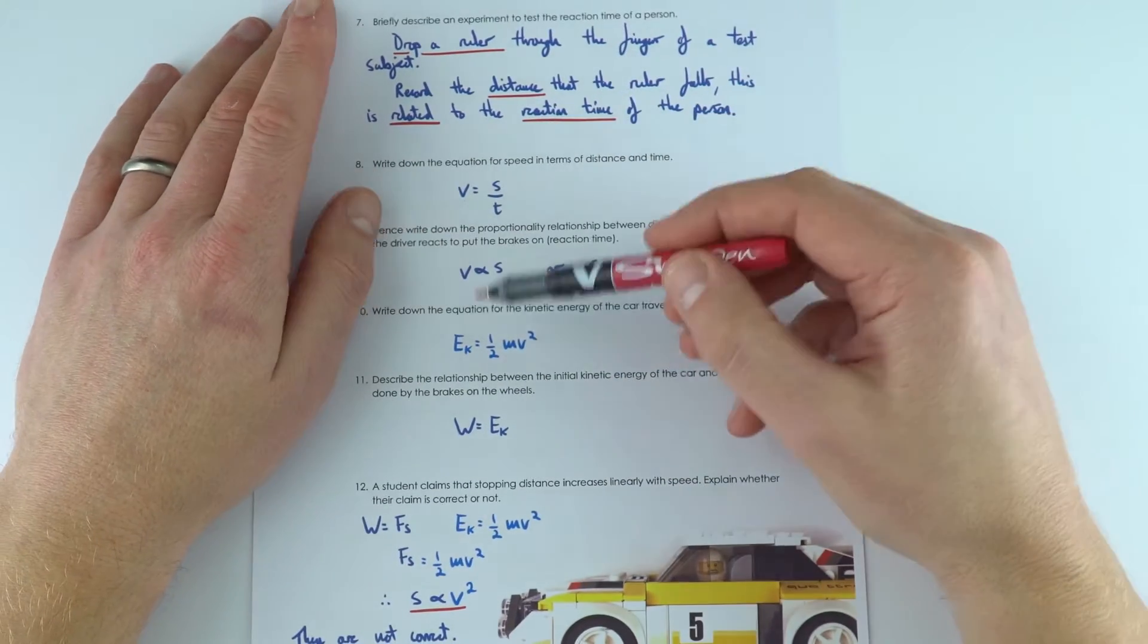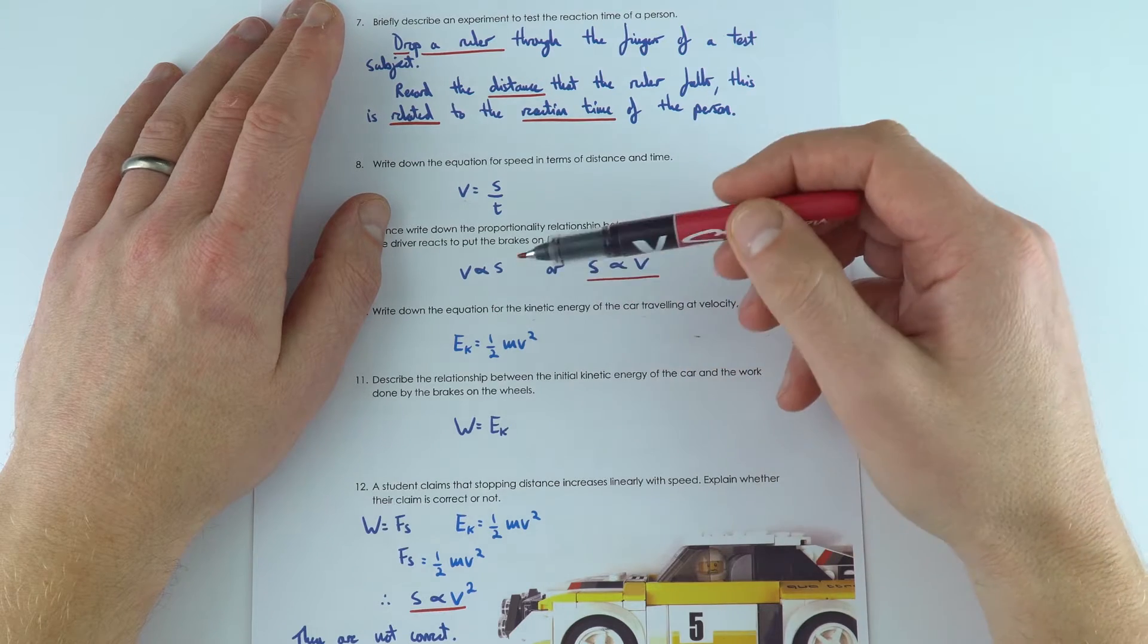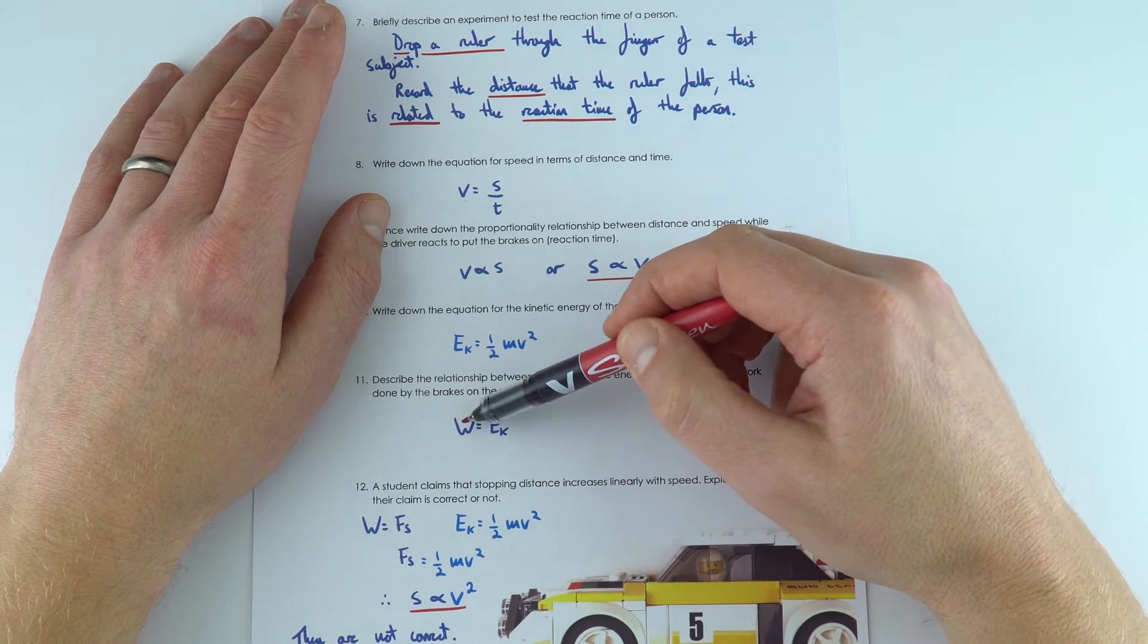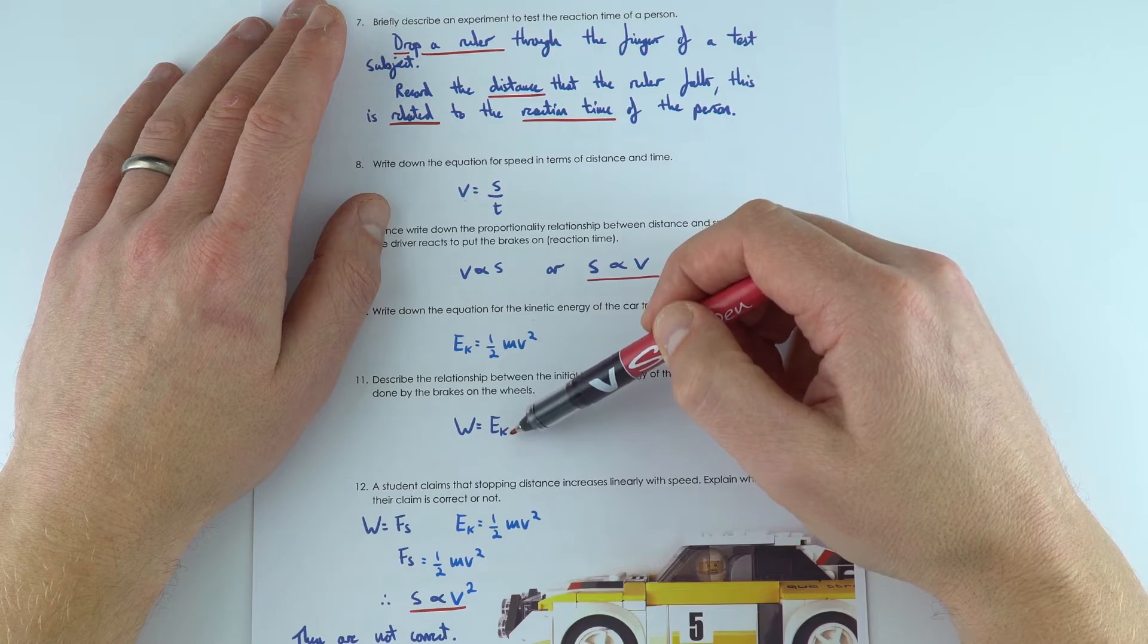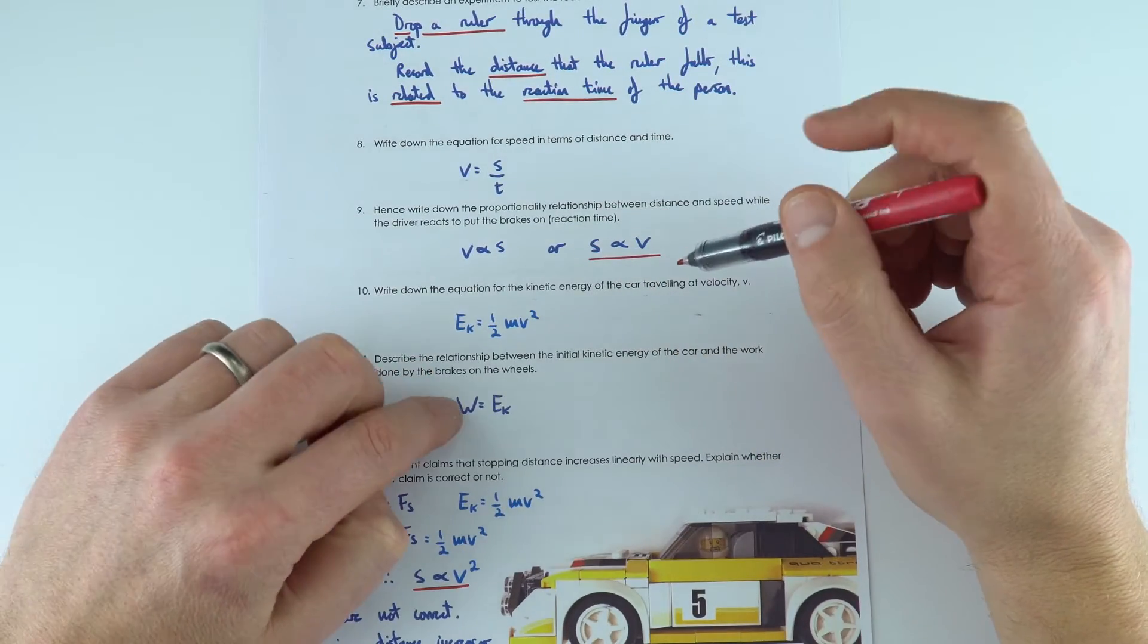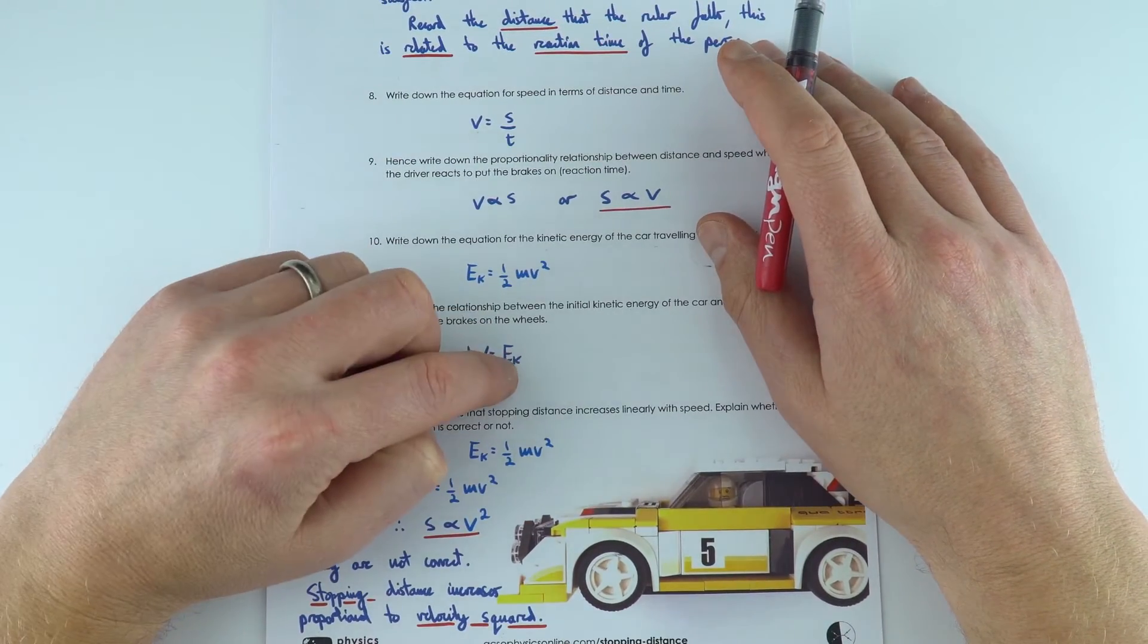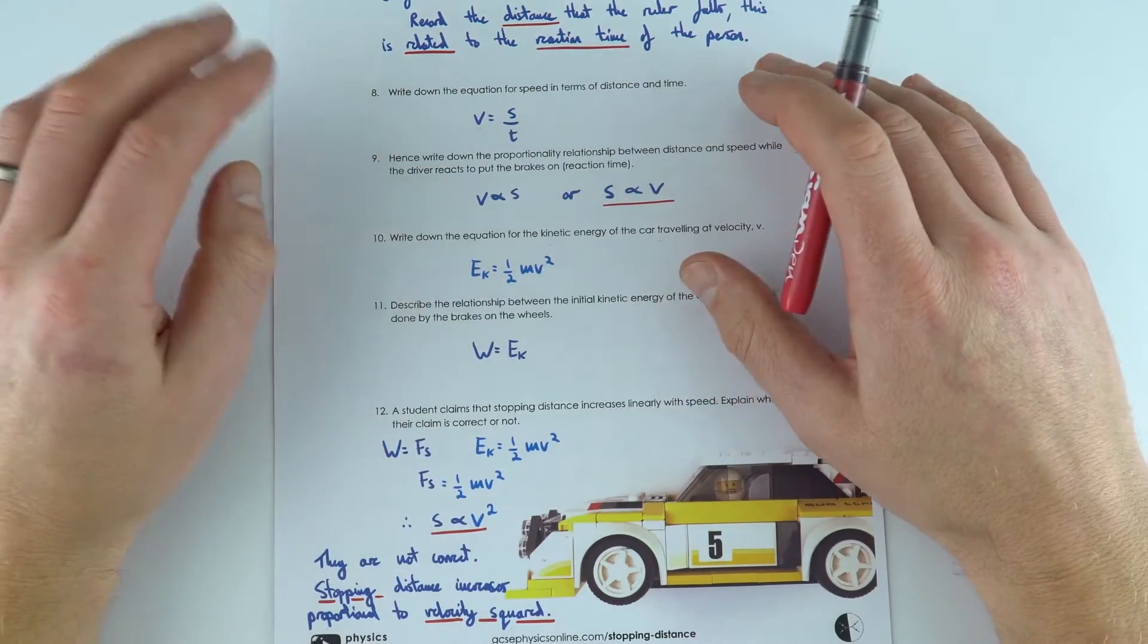But when we're looking at kinetic energy, kinetic energy is equal to a half mv squared. And the work done by the brakes is equal to the kinetic energy of that vehicle, because effectively, as a force is applied over a distance by the brakes, that's going to transfer the kinetic energy from that store into the thermal store of the brakes and the surroundings.